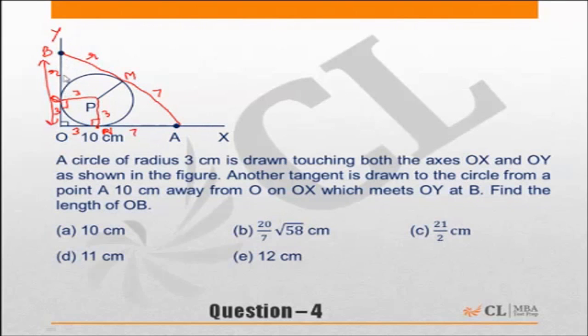Two tangents from the same point to a circle are equal in length. So you can apply Pythagoras here: (R + 7)² = (R + 3)² + 10².